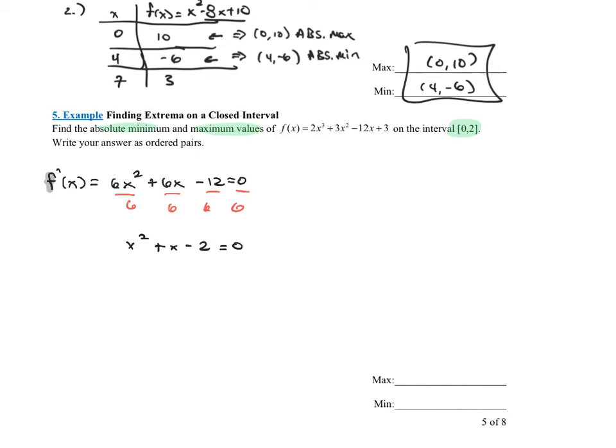I need two numbers that multiply to be negative 2, add to be 1. That would be x plus 2 and x minus 1 equals to 0. Set each one of those factors equal to 0. x plus 2 equals 0 gives me x equals negative 2. x minus 1 equals 0 gives me x equals 1. These two numbers are in the domain of my original function, so these are my critical values.